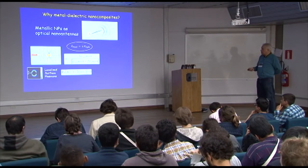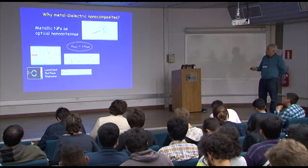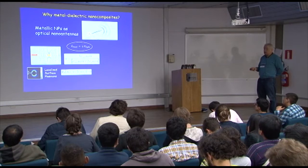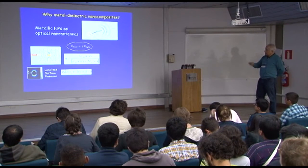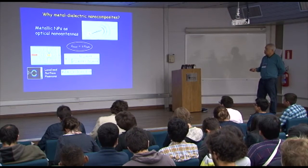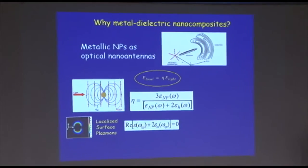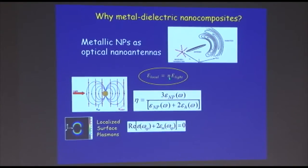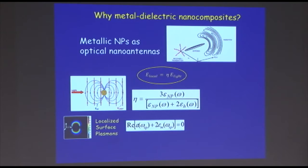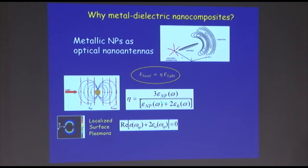At any point nearby, the local field equals the field of the light multiplied by a factor that depends on the dielectric function of the nanoparticle in the host. The electrons in the particle oscillate, creating a dipole that changes in time, so the total field is a composition of the applied optical field plus the field created by the particles. This factor — the local field factor — depends on frequency. If I select a frequency such that the real part of the denominator is zero, I have a resonance: localized surface plasmon resonance.